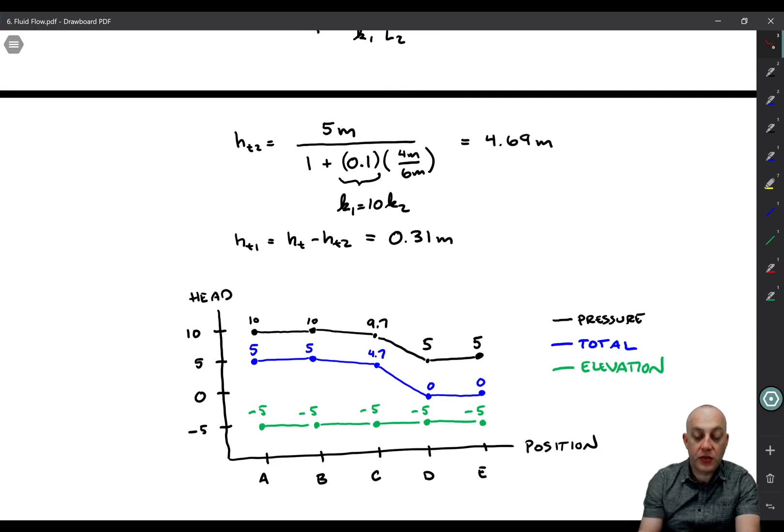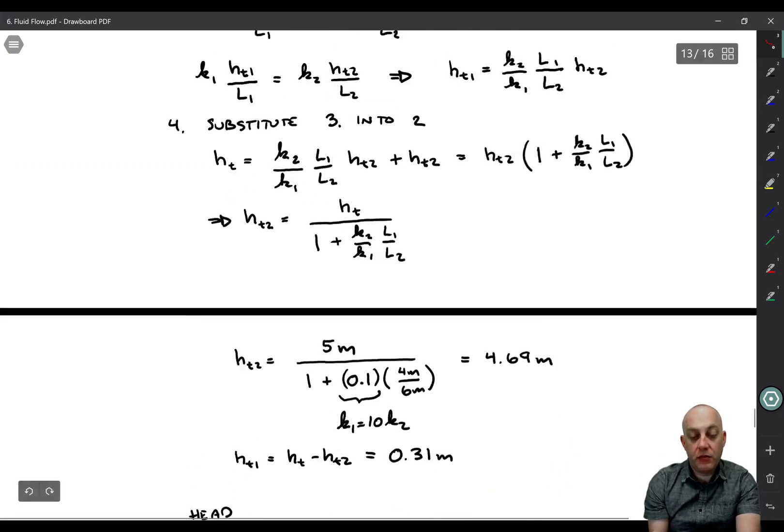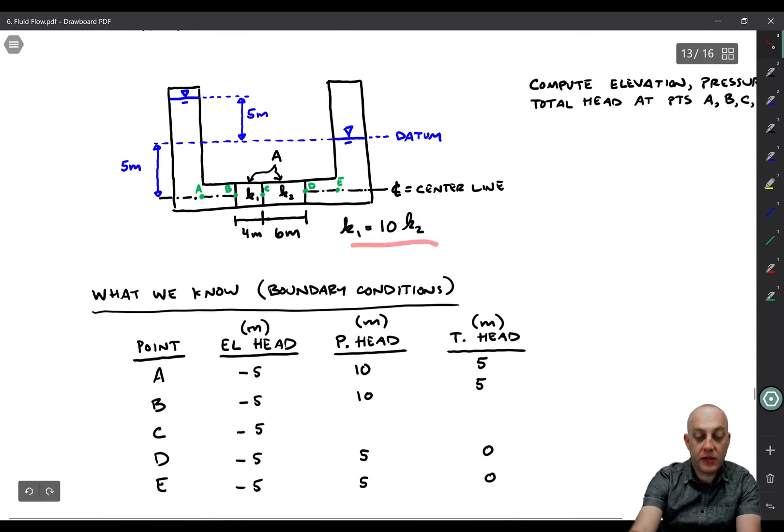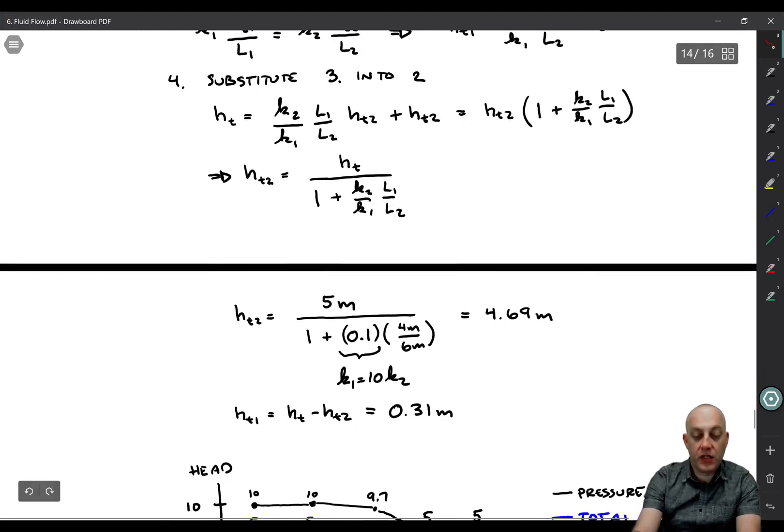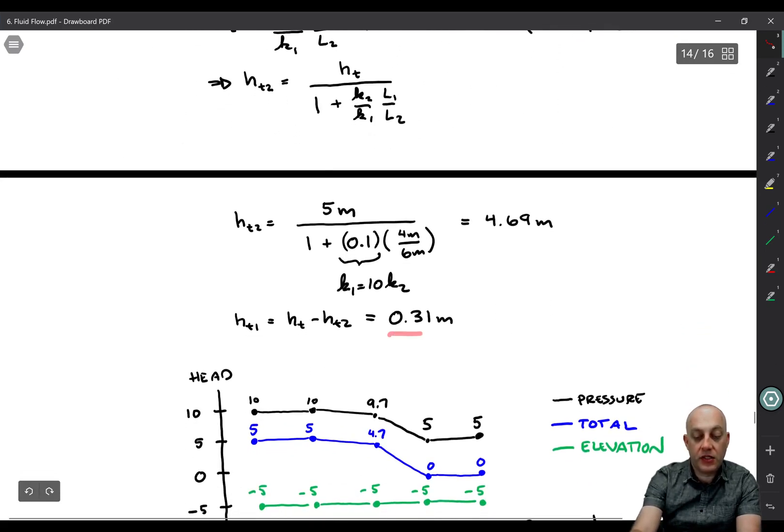Then we can solve for the actual number by plugging in variables. HT is five meters. We have K2 over K1 here. We knew from the problem statement that K1 is equal to 10 times K2. Therefore, K2 over K1 is equal to 1 over 10. So you get the 0.1 right there. And then we know L1 was 4 meters, and L2 was 6 meters. Therefore, HL2 in layer 2 is 4.69 meters. Now that we know HL2, it's easy for us to compute HL1. HL1 just comes out to 0.31 meters.